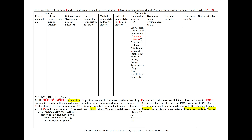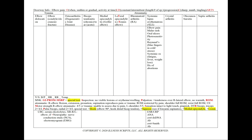In rheumatoid arthritis, we'll find elbow pain characteristically aggravated in the morning — high yield: morning stiffness — and alleviated with use, along with bilateral small joint arthritis in the wrists or fingers. We could also see systemic symptoms: fatigue, fever, or weight loss in our review of symptoms. We could note a positive family history, and we'll order ESR-CRP, rheumatoid factor, and anti-CCP antibodies.